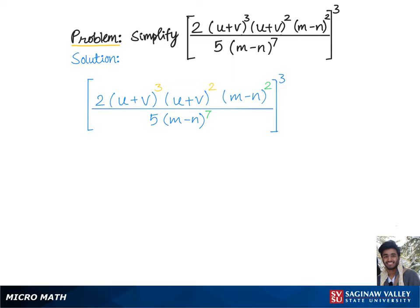Using rule 1, according to which we will get 2 times the common base u plus v raised to the exponents added together, that is 3 plus 2. Now let's work on the exponents with common base m minus n.